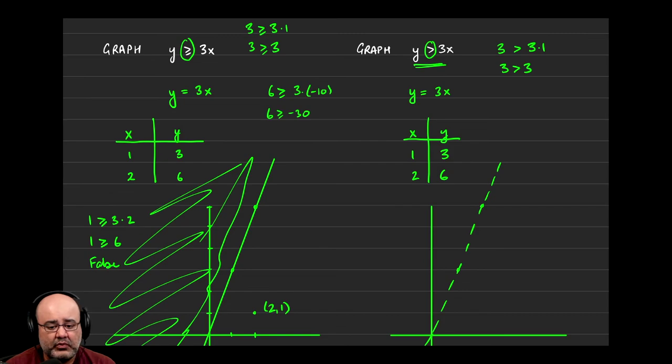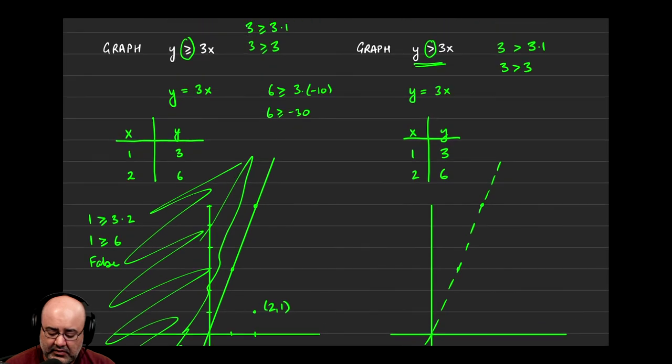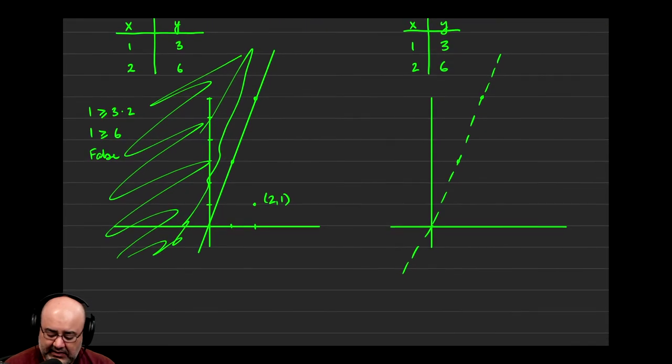And then how do we know which side to shade? You plug in a test point. If the test point results in a true statement, you shade the side that the test point is on. And if it results in a false statement, then you shade the opposite side that the test point is on. So in this case, for y is greater than 3x, let's pick a point here, say negative 1, 2.